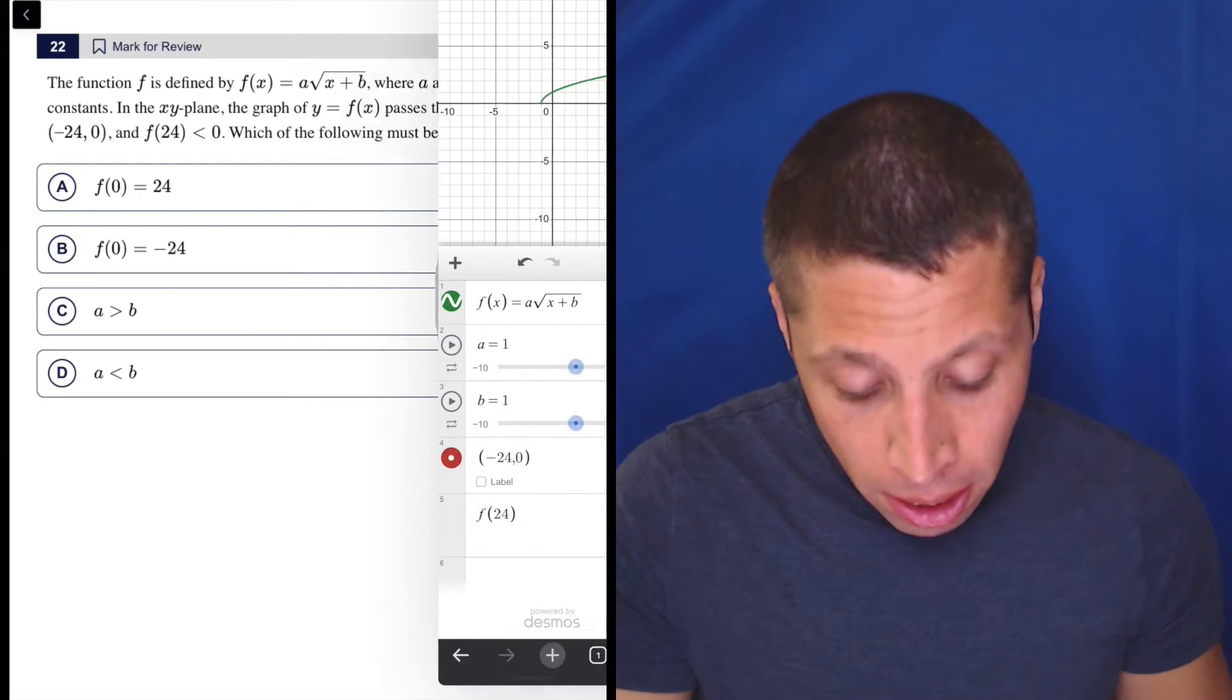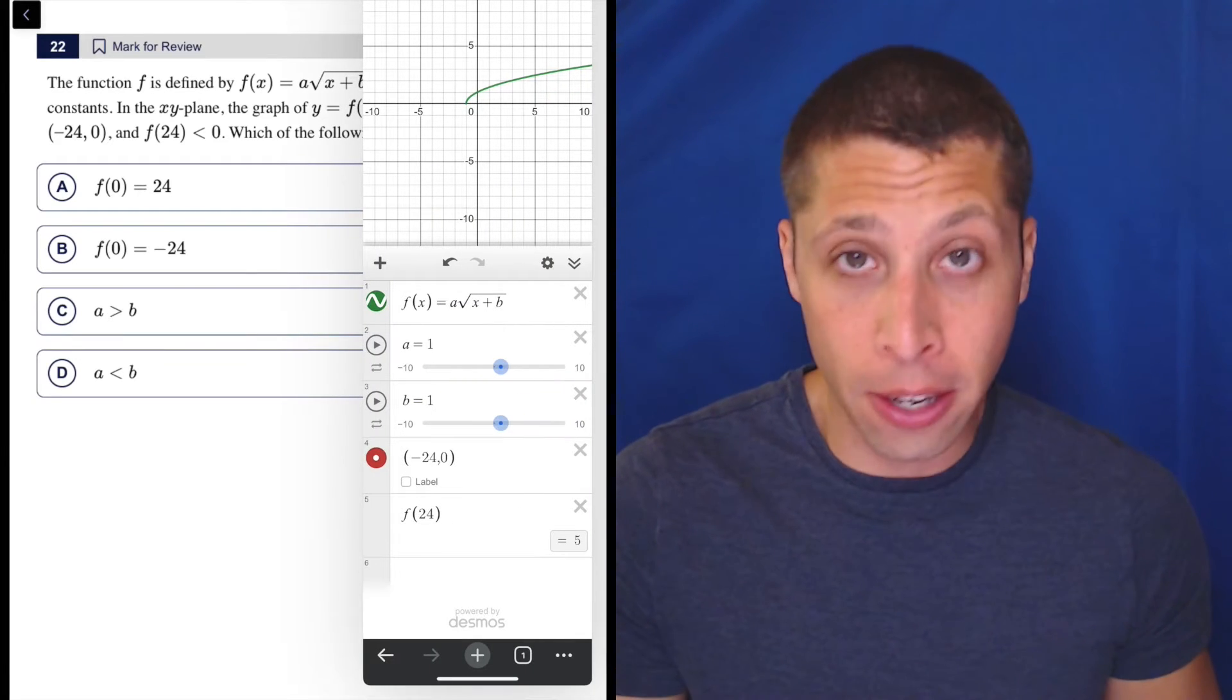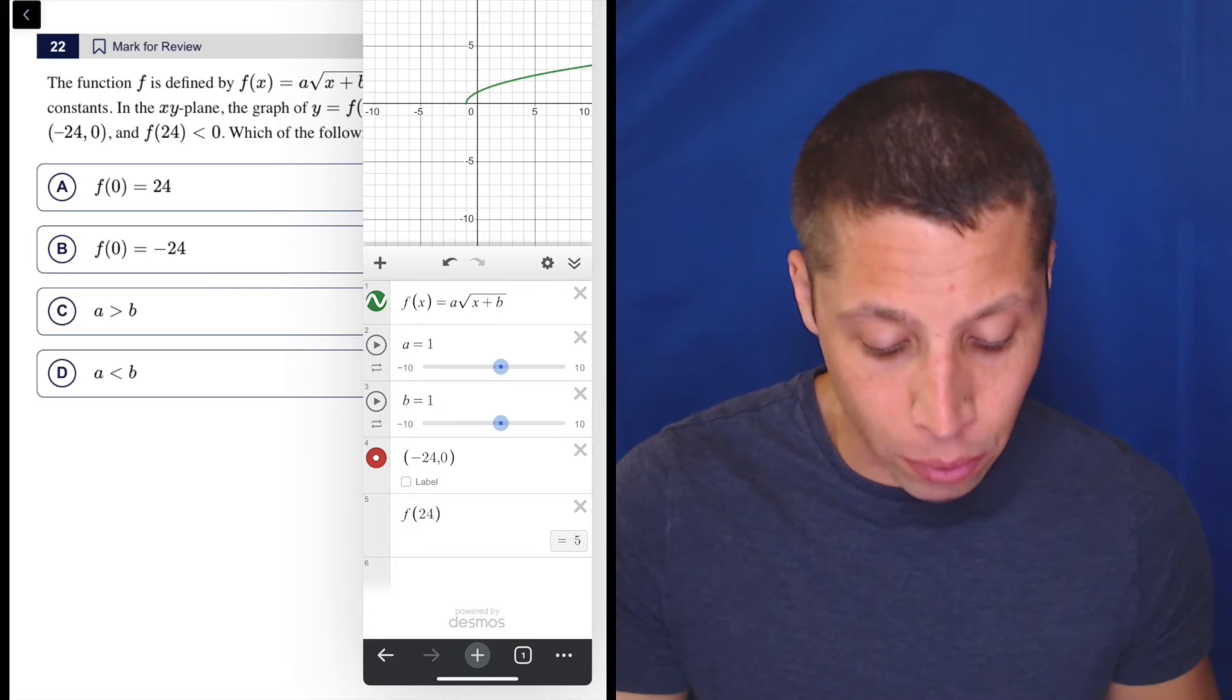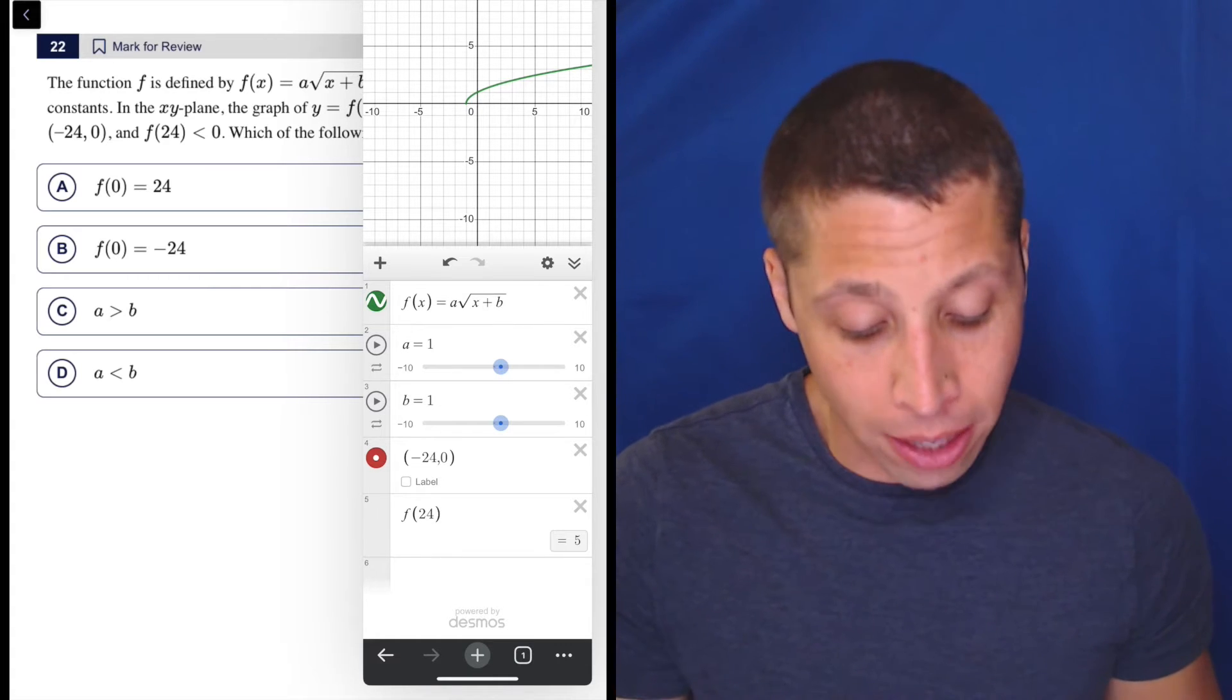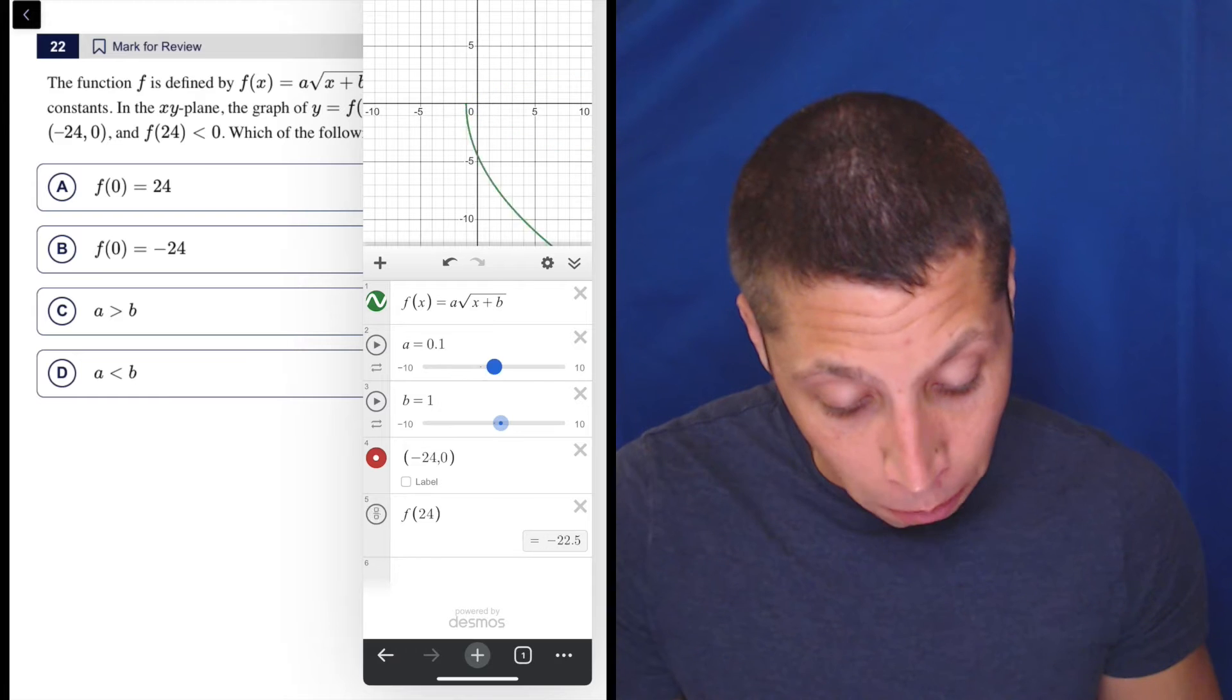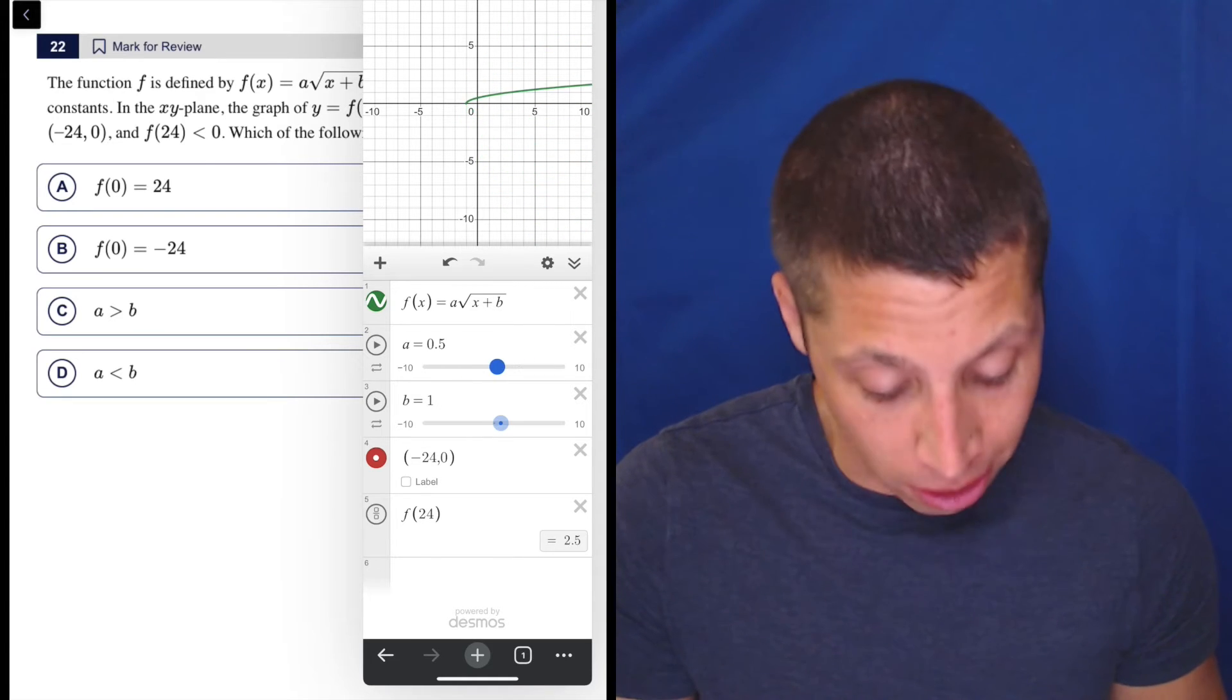Now, we could go to Desmos, and I've kind of put all the information in here to show you what it would be. So if we had f(x) equals A radical x plus B, we have sliders, we can play with those sliders, it's going to change the way this thing looks.